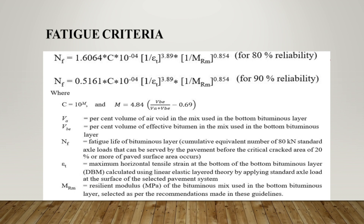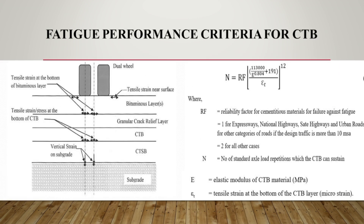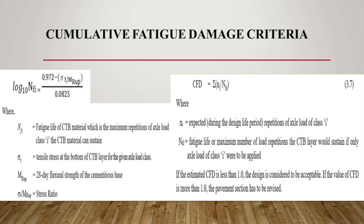These equations are obtained through performance models with R6 and R56 research schemes. CTB layers, i.e. cement treated bases, are stabilized layers with the use of cementitious materials such as cement, fly ash, etc. If CTB layers are being used, fatigue performance criteria and cumulative fatigue damage criteria must be considered, from which tensile strain and tensile stresses are calculated. In cumulative fatigue analysis, the cumulative ratio of NI and NFI must be less than 1. If greater than 1, the pavement needs to be redesigned.